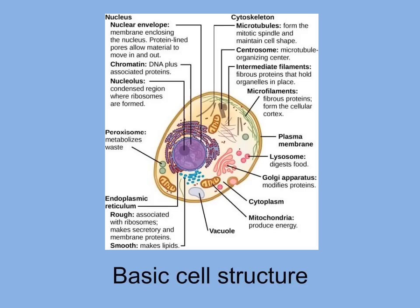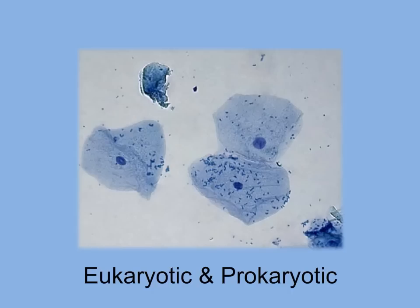Each cell displays a high level of organization. A membrane separates the contents of the cell from the external environment. A cell contains structures, such as ribosomes, that enable it to perform all activities required for life. Its genetic instructions are coded in DNA, which is found within a specific region of the cell.